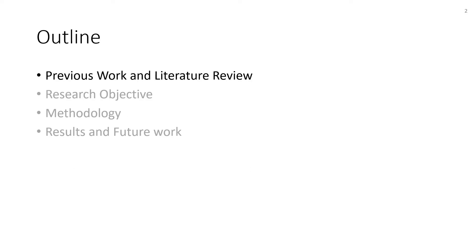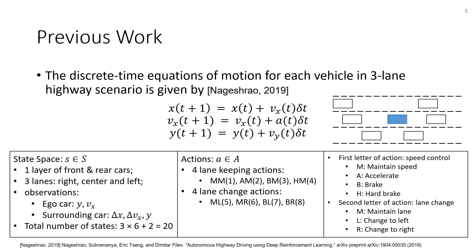First, I will talk about previous work and literature review. In the previous work, the agent is trained in a three-lane highway scenario with the information of the first layer of front and rear cars, and the action space is discrete — it has eight options.